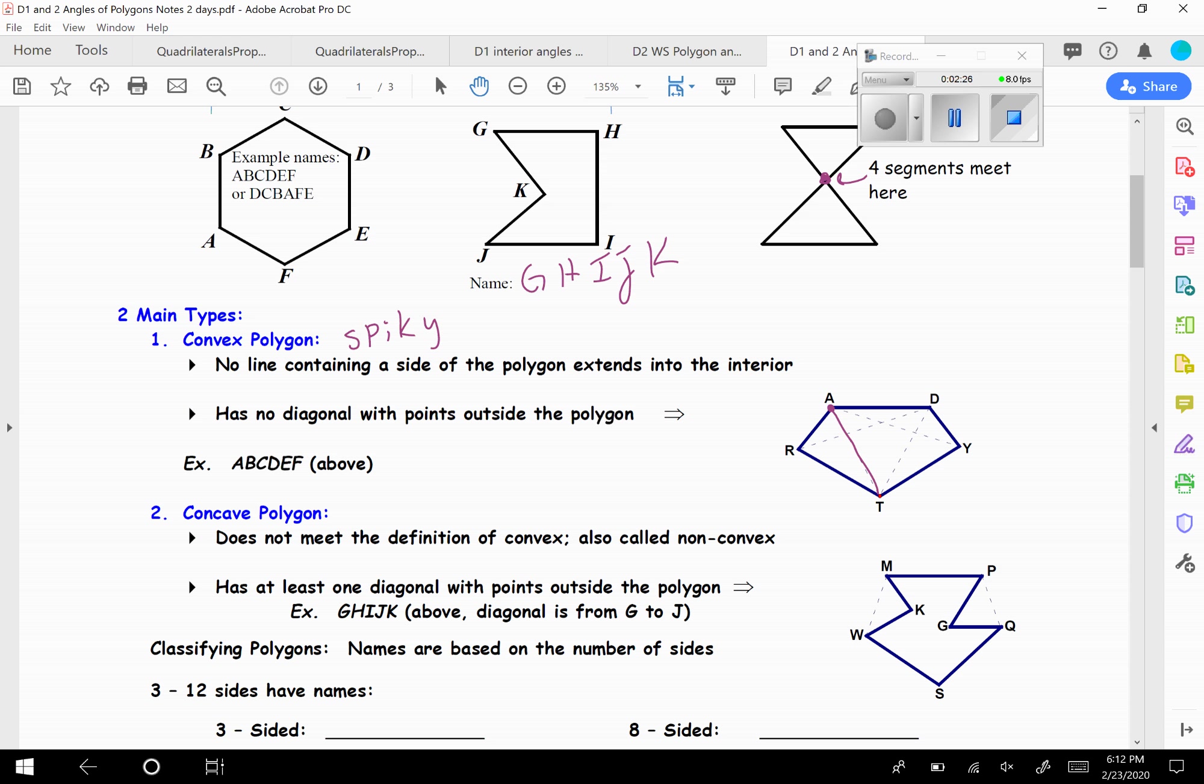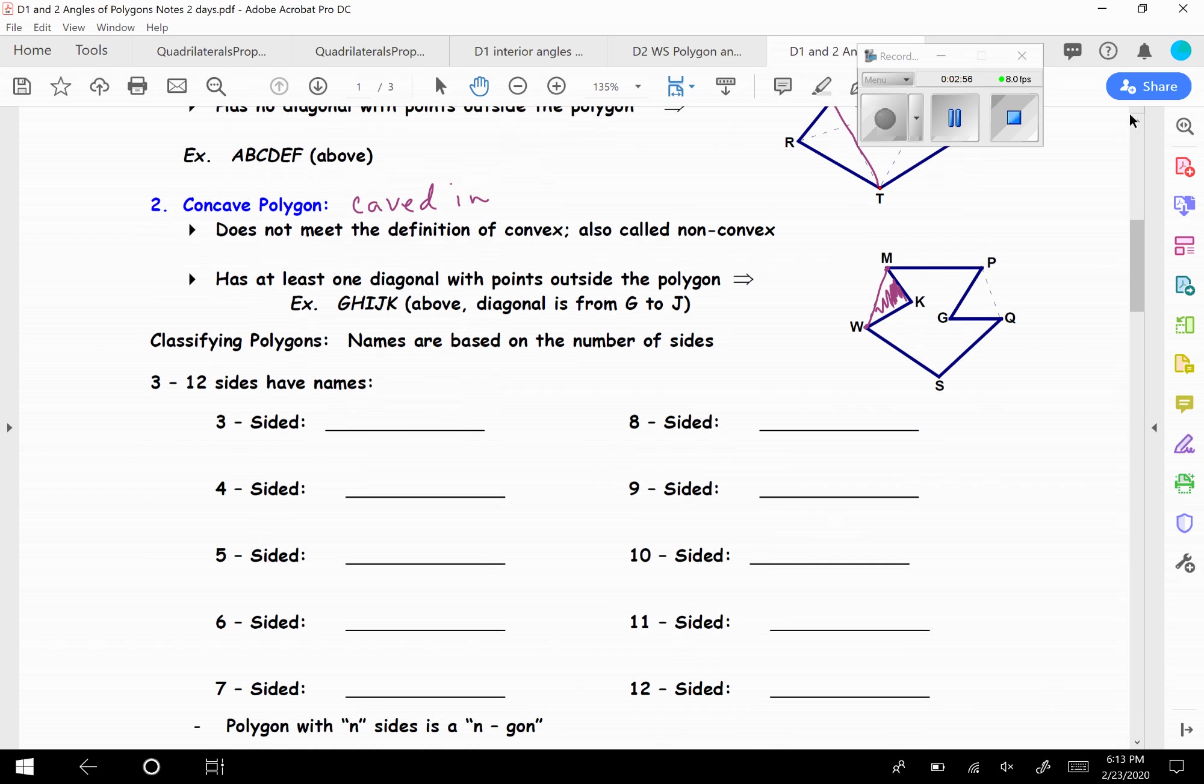And then concave. I like to say these look like they are caved in. They don't meet the definition of convex. And it has at least one diagonal with points outside of the polygon. So here, this diagonal MW, it's outside that polygon. And so basically, if you can draw a little cave, then it's a concave polygon.